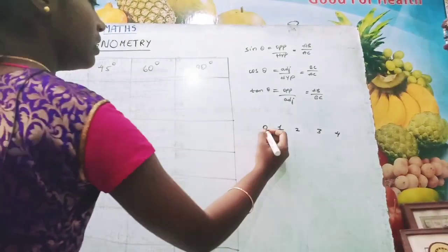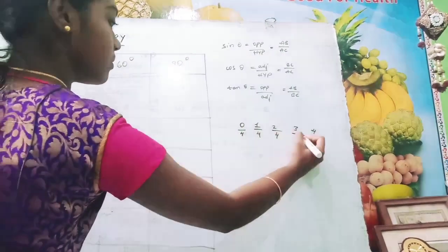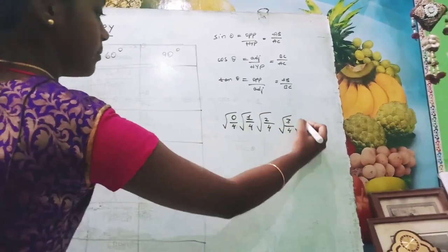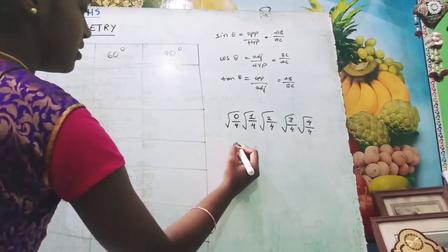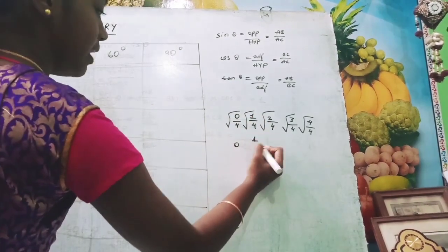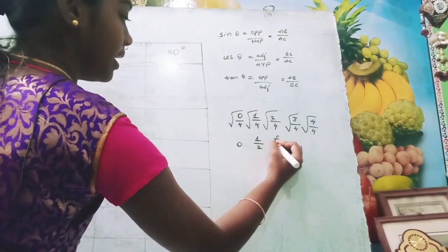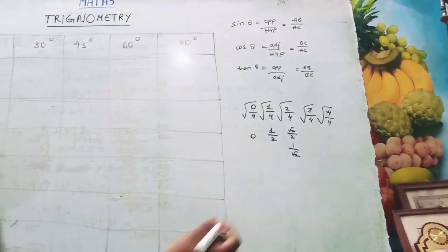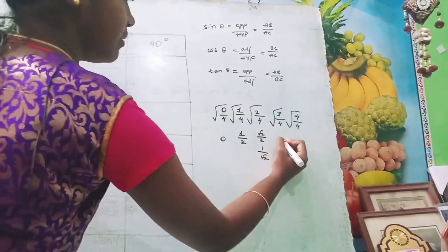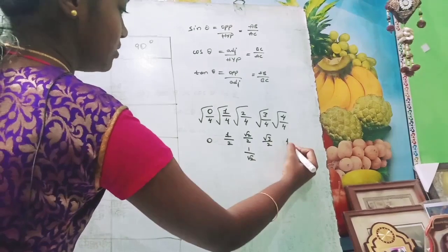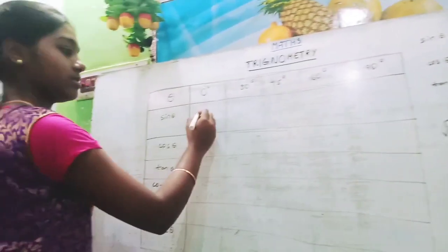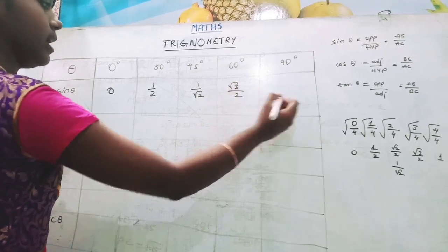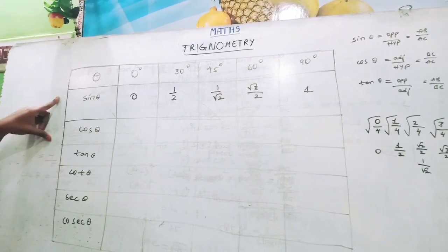Divide each of the following with 4 and add a square root to each. We get the values as: 0, 1 by 2, root 2 by 2 which we write as 1 by root 2, root 3 by 2, and 1. So sin 0° = 0, sin 30° = 1/2, sin 45° = 1/√2, sin 60° = √3/2, and sin 90° = 1.